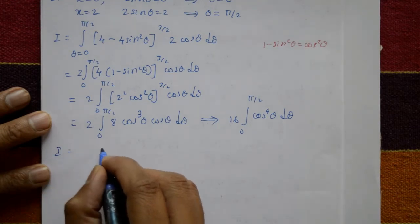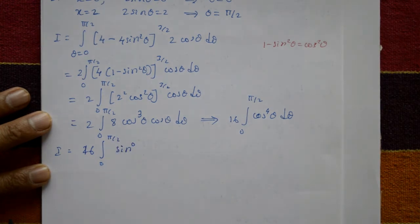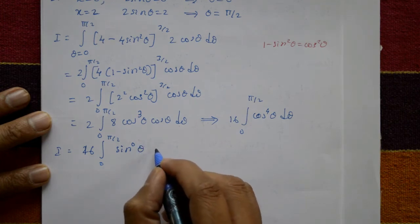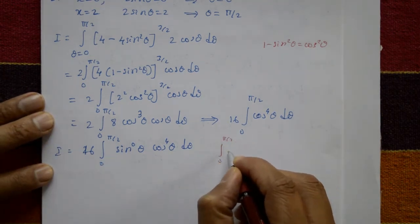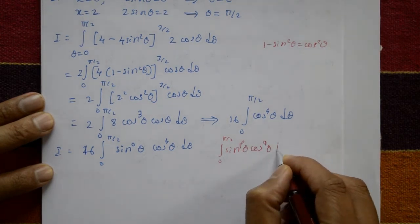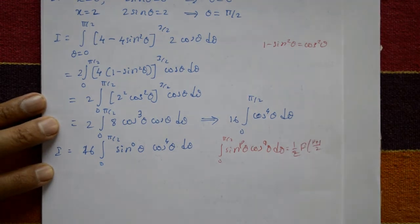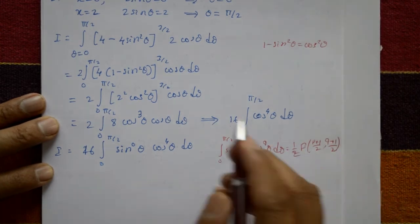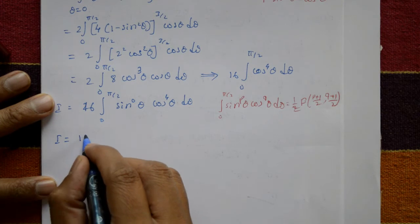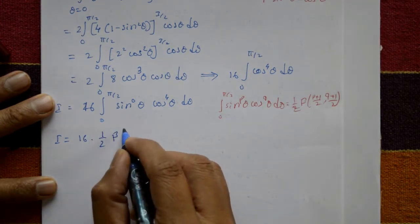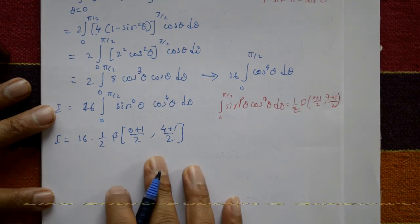So I equals 16 times the integral from 0 to pi by 2 of sine to the power 0 times cos to the power 4 theta d theta. Using the beta function formula, the integral from 0 to pi by 2 of sine^p theta cos^q theta d theta equals one half times beta of (p+1)/2, (q+1)/2. With p equals 0 and q equals 4, this gives 16 times one half times beta of 1 by 2 and 5 by 2.